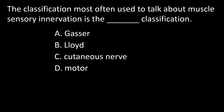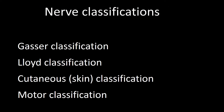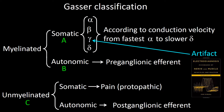The first question is: the classification most often used to talk about muscle sensory innervation is the dash classification. A: Geyser, B: Lloyd, C: Cutaneous nerve, D: Motor. Of the four most often used classifications, the Geyser classification can be used to classify all nerves — peripheral and cranial, autonomic or regular, motor or sensory, and all their modalities.